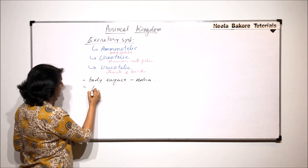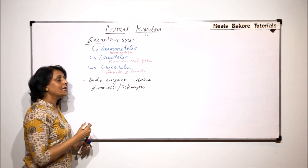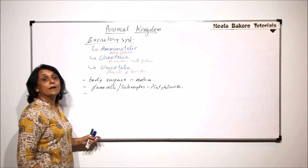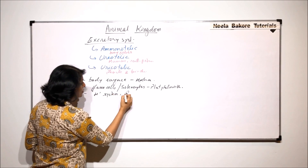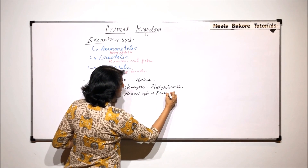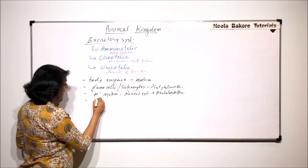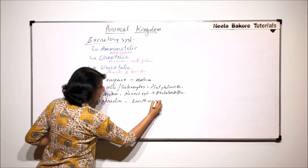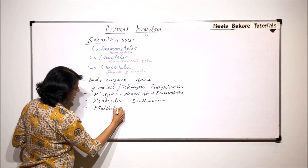Then there are specialized cells called flame cells, also known as solenocytes, seen in Platyhelminthes. In roundworms there is the H-shaped system, also known as the renette system. In Annelida like earthworms there are nephridia. In insects like cockroaches there are Malpighian tubules.